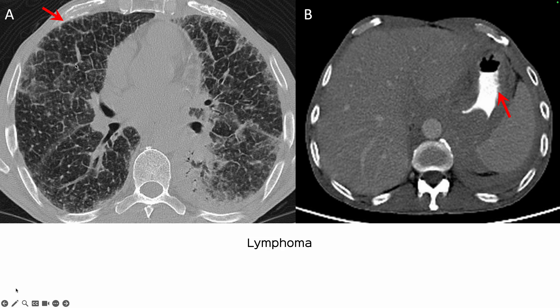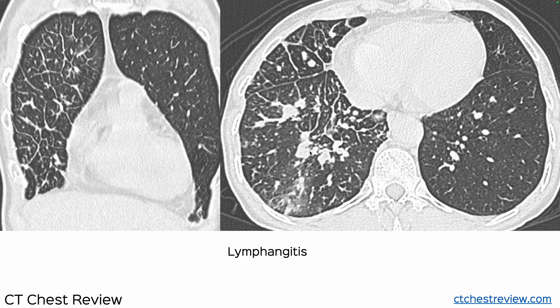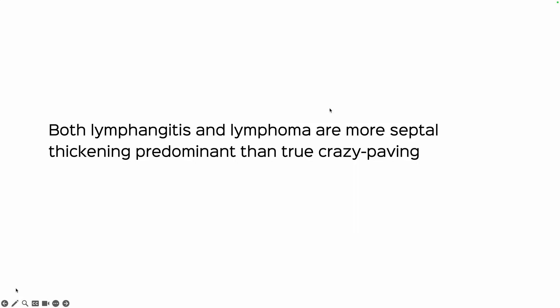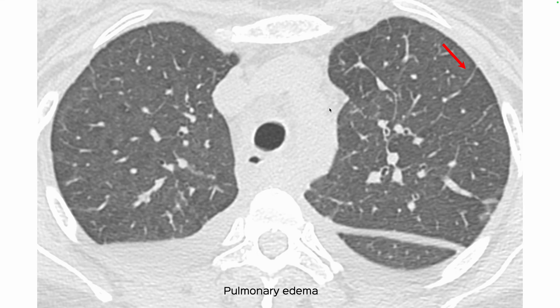This is a patient with lymphoma showing crazy paving with septal thickening and ground glass. There was pleural involvement and gastric involvement on the same CT, which allowed us to suggest the diagnosis — later proven on biopsy. Lymphangitis typically presents with septal thickening and rarely has a true crazy paving appearance, so both lymphoma and lymphangitis are more septal-thickening predominant.